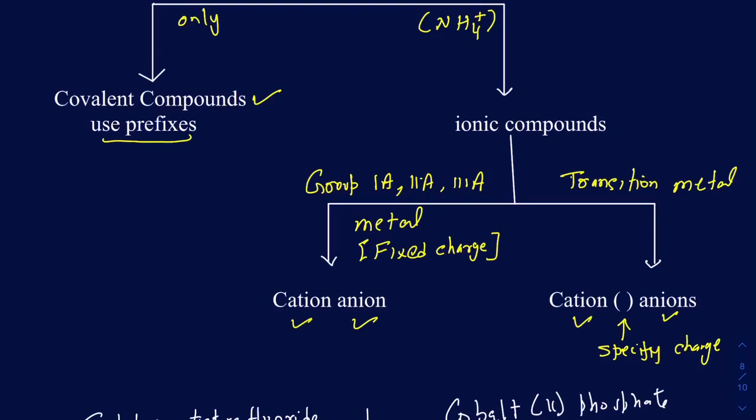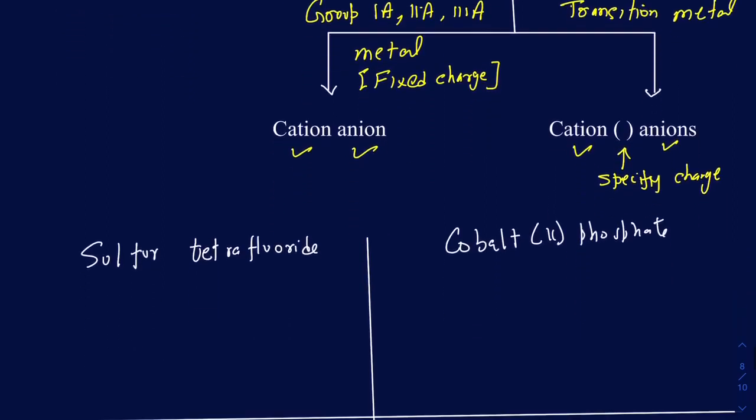This is a very common mistake students make — they take the Roman numeral as the number of cations. It's not the number of cations, it's the charge on the cation. So that's the overall summary of these rules. Let's use those rules and apply them to some examples.